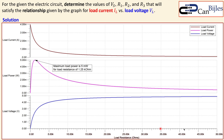We can also look at the power curves. Sweeping the load resistance from zero to 50 kilohms: the load current starts at four milliamps and asymptotically approaches zero; the load voltage starts at zero and asymptotically approaches five volts. Multiplying these two curves gives a power curve with a maximum at a load resistance of 1.25 kilohms — our Thevenin resistance — producing five milliwatts maximum power.